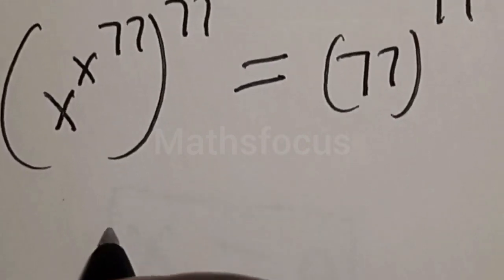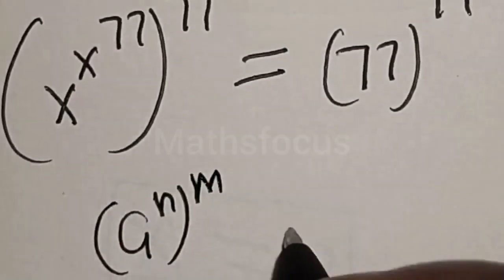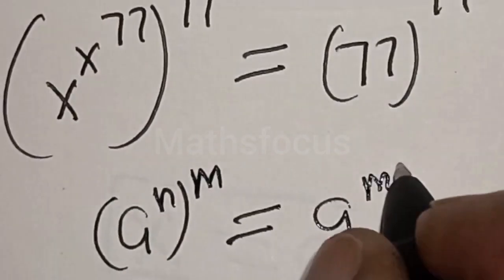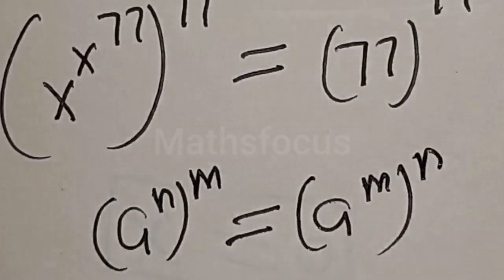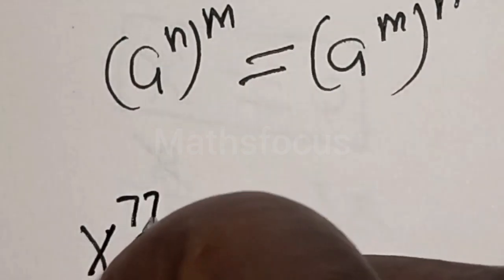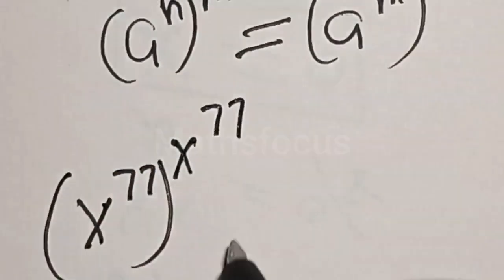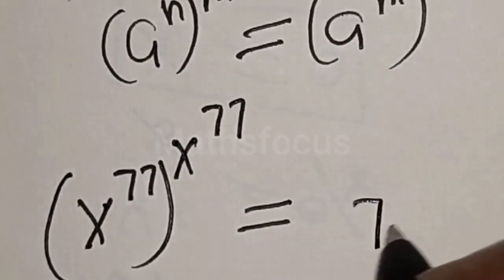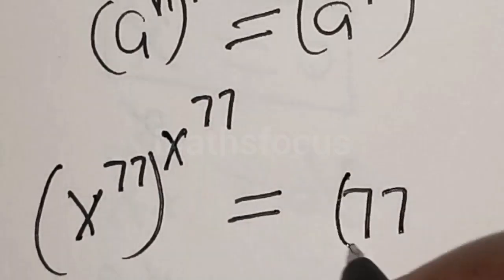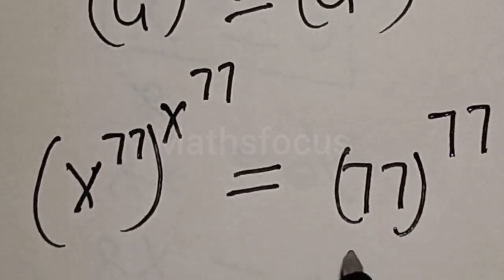Now remember that if you have a raised to power n, raised to power m, this is equal to a raised to power m raised to power n. Applying this rule, we get s raised to the power 77, raised to the power s raised to the power 77, is equal to 77 raised to the power 77.